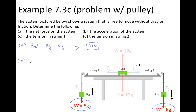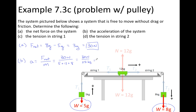For part B, to find the acceleration of the system, we take Newton's second law: acceleration equals net force over mass, applying it to our three-object system. The net force is 30 newtons. The mass is the sum of all three objects' masses: 5 plus 12 plus 8, which totals 25 kilograms. So the acceleration is 30 newtons divided by 25 kilograms, or 1.2 meters per second squared.